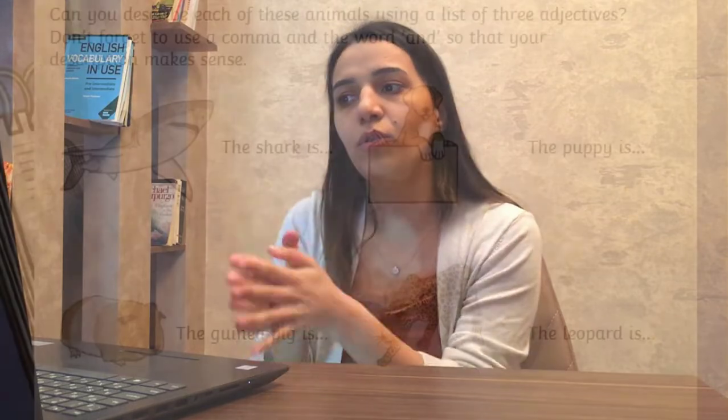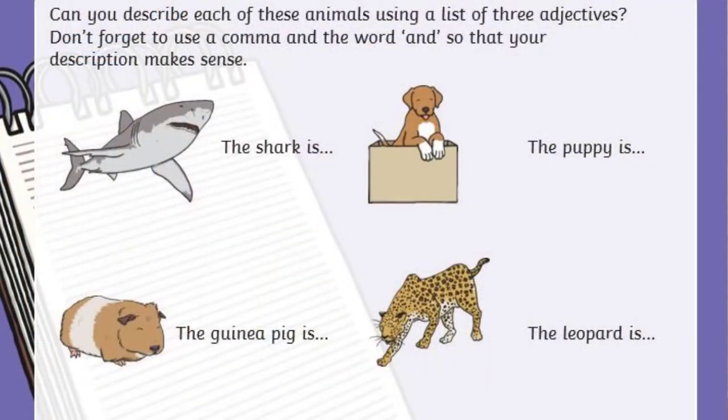I'll give you time. Could you do this activity? Now we have another interesting activity. There are four types of animals here — can you describe each of these animals using a list of three adjectives? You are going to find three adjectives to describe these animals. We have here shark, puppy, guinea and leopard. I give you some time to think about it and write some adjectives to describe these animals. Don't forget to use a comma and 'and'.